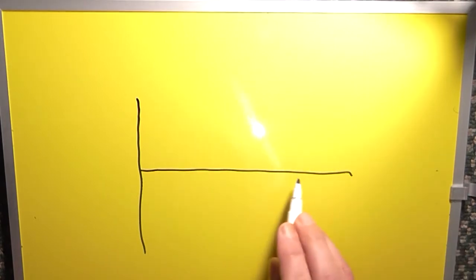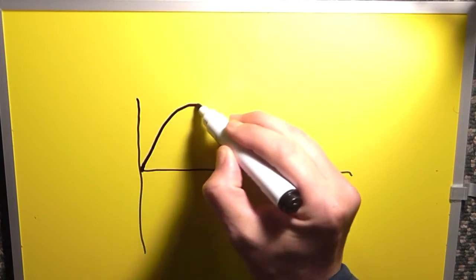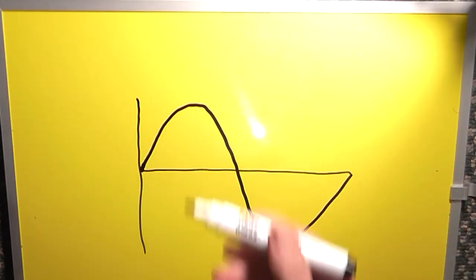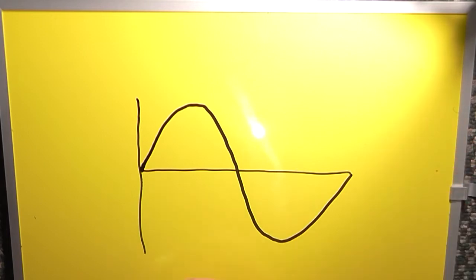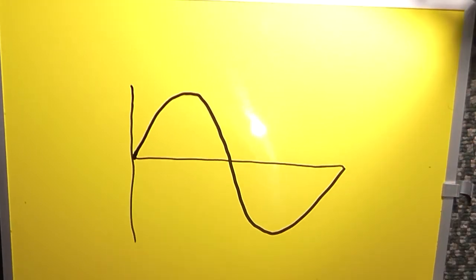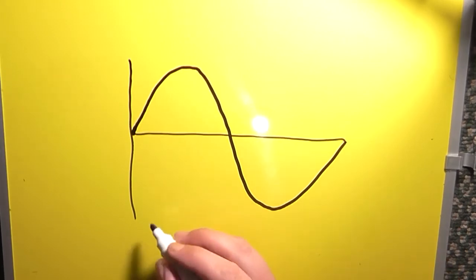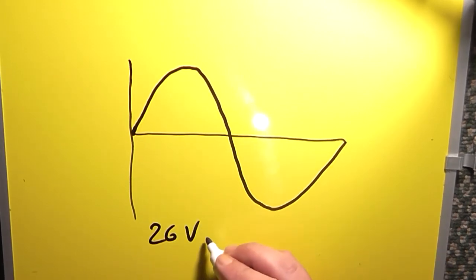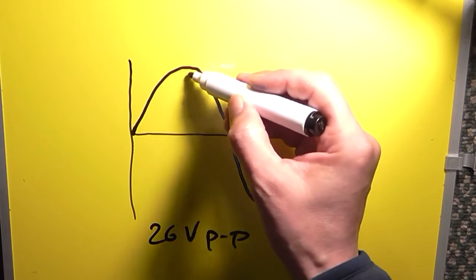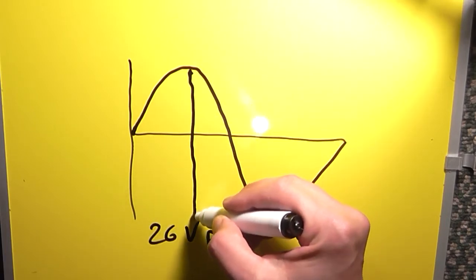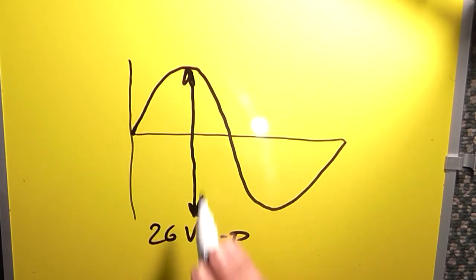Take for example an oscilloscope trace. There's our zero line, and we have our audio sine wave — say 1 kHz — and we've got a voltage of let's say 26 volt peak to peak. When you see P-P or PP, that means peak to peak — it's from this point to that point. That's our peak-to-peak voltage.